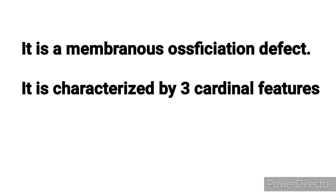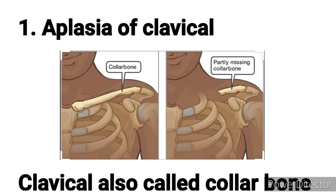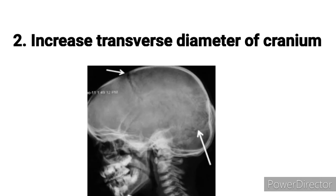Number one is varying degrees of aplasia of the clavicle. Since the 'cleido' part of the name relates to the clavicle, the first cardinal feature is aplasia of the clavicle. Aplasia means failure of development — the clavicle is not fully developed, some part of the clavicle may be missing, or there is poor development of the clavicle. This is the first cardinal feature of cleidocranial dysostosis.